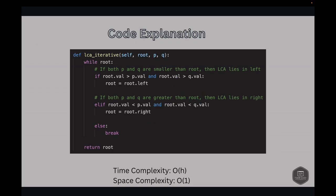The time complexity for the iterative approach is also O(H), similar to the recursive approach — it traverses from the root to the lowest common ancestor, which is O(log N) for a balanced tree and O(N) for a skewed tree. The space complexity is O(1), because it uses no additional space that grows with input size — only variables for the current node and target values.